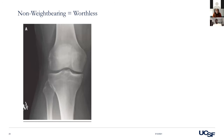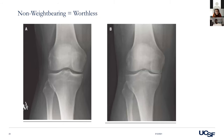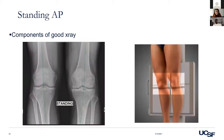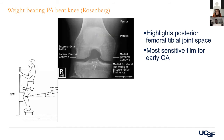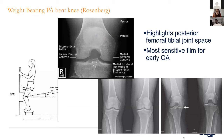Moving on to knee x-rays. Non-weight-bearing films are essentially worthless — whenever someone comes from a primary care physician with a non-weight-bearing film, just repeat it. A good AP is a standing view shot at about a seven-degree downward angle to get the tibia on axis with the slope. The Rosenberg view is a bent-knee PA view — this is the most sensitive for early knee arthritis and is where you'll see the medial OA pattern first.